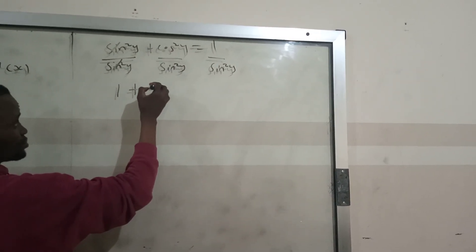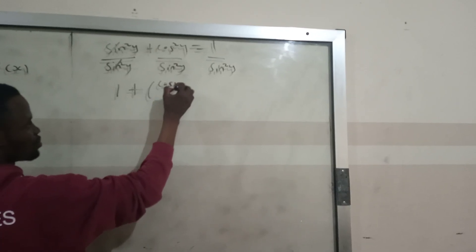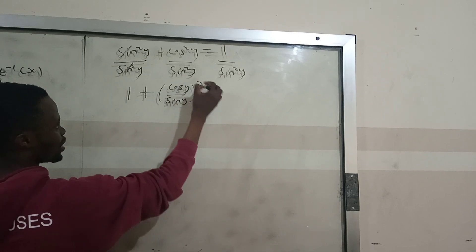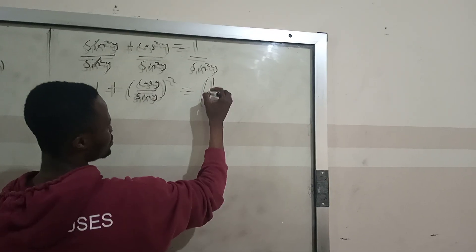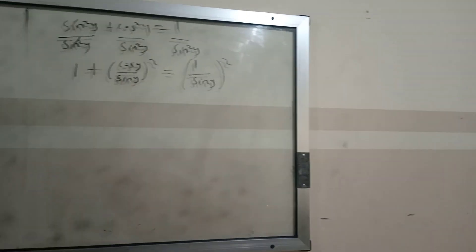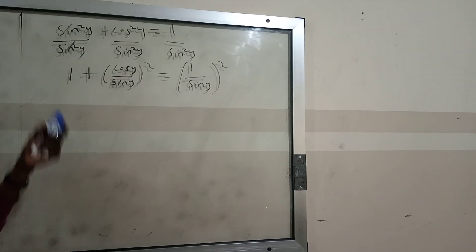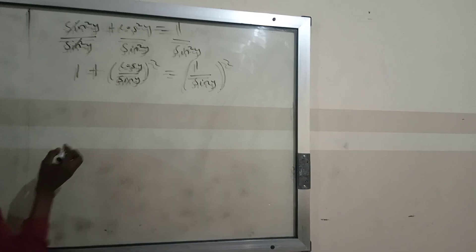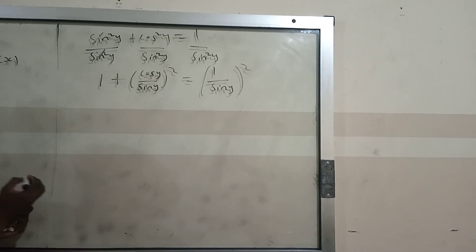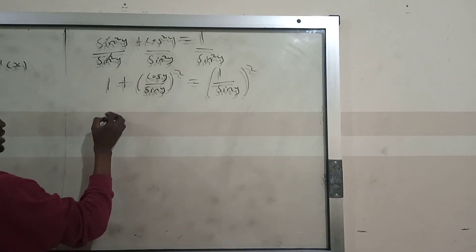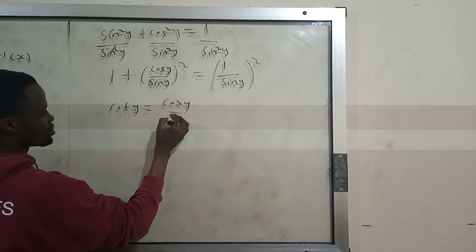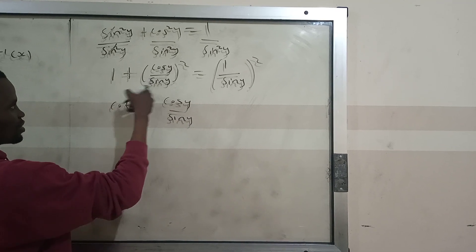Dividing both sides by sin²(y): sin²(y)/sin²(y) cancels to give 1, and cos²(y)/sin²(y) is cot²(y). So we get 1 plus cot²(y) equal to cosec²(y). Meaning that cosec²(y) is equal to 1 plus cot²(y). So in place of cosec²(y) you can put 1 plus cot²(y).